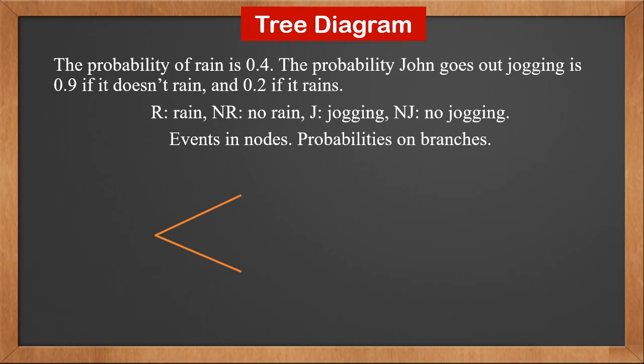We draw out two branches to R and NR. Put 0.4 on the branch to R because probability of rain is 0.4. P(R) is 0.4, then P(NR) is 0.6. We put 0.6 on the branch to NR.